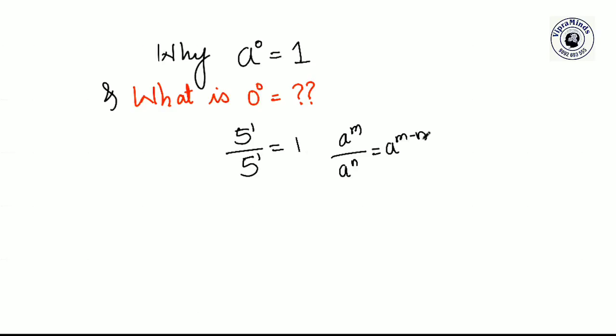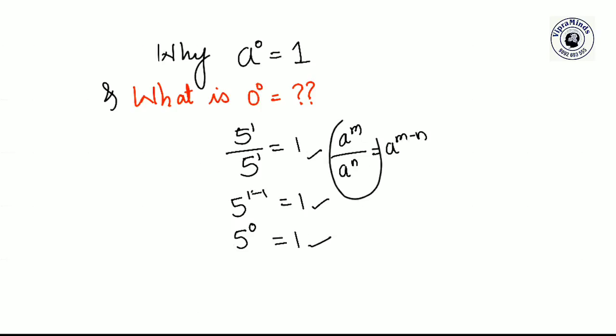On the left side, the base is 5 and m and n are both 1. So we get 5 raised to 1 minus 1, which is 5 raised to 0, and that equals 1. So 5 raised to 0 is equal to 1. Similarly, you can take 10,000 divided by 10,000: the power is 1 minus 1 equals 0, so 10,000 raised to 0 is equal to 1. You can take any value like this.